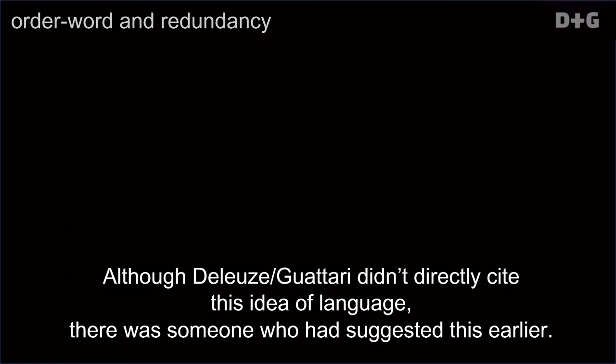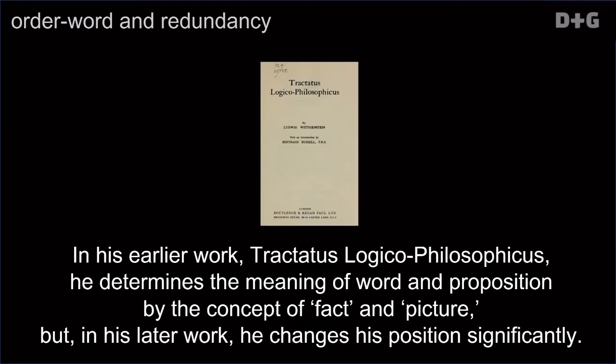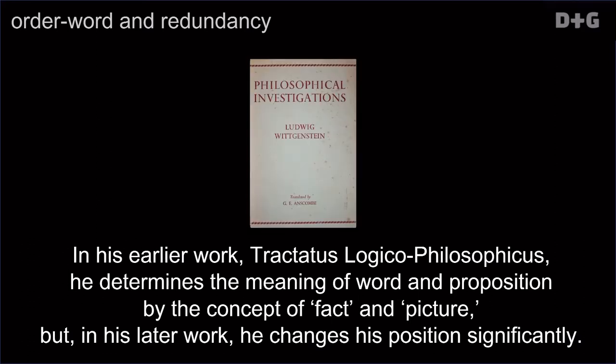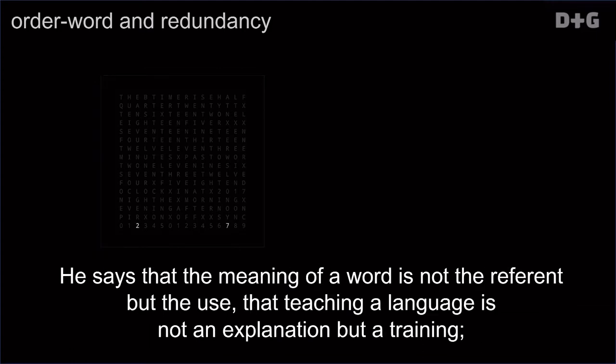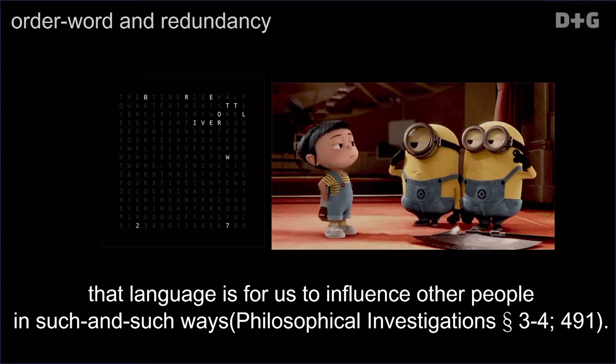Although Deleuze-Guattari didn't directly cite this idea of language, there was someone who had suggested this earlier. Wittgenstein is that person. In his earlier work, Tractatus Logico-Philosophicus, he determines the meaning of word and proposition by the concept of fact and picture. But in his later work, he changes his proposition significantly. He says that the meaning of a word is not the referent but the use, that teaching a language is not an explanation but a training, that language is for us to influence other people in such and such ways.